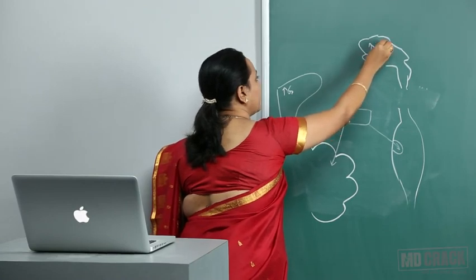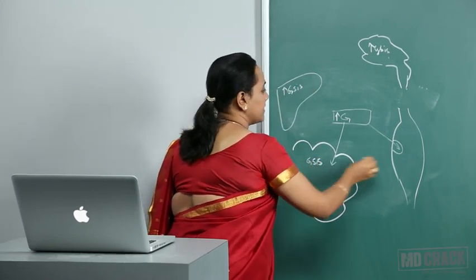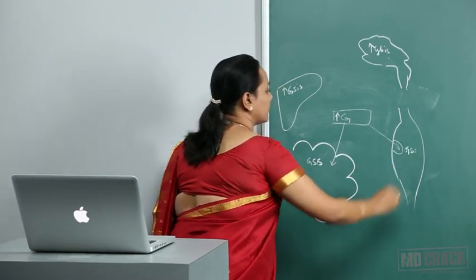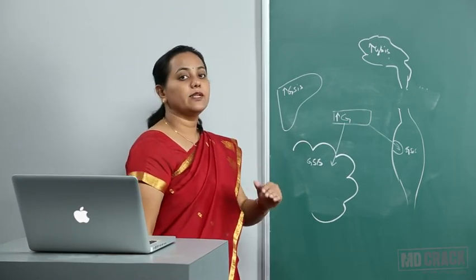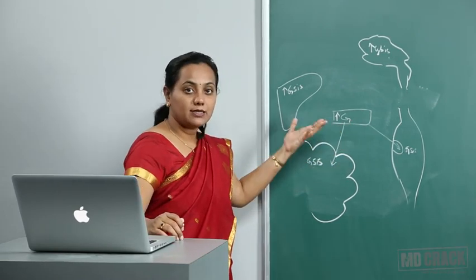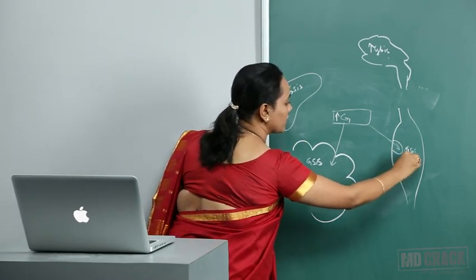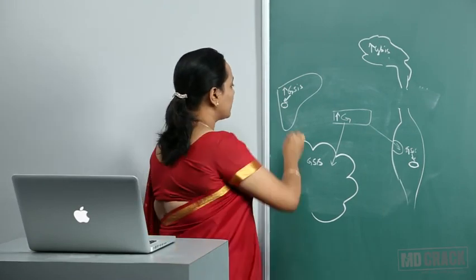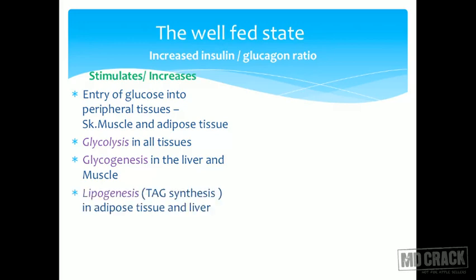Glycolysis is stimulated in all tissues once glucose has entered. Because there is an excess of glucose, insulin also promotes storage: glycogen synthesis is stimulated in both the liver and muscle. Blood glucose levels come down as glucose is distributed and utilized or stored.